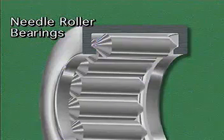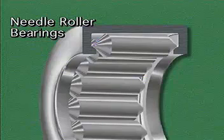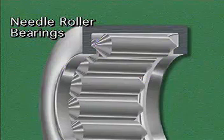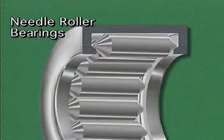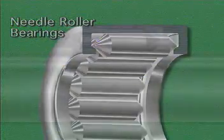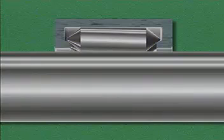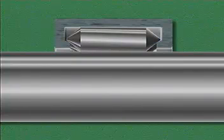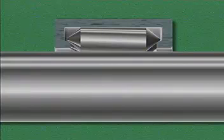Needle roller bearings are similar to cylindrical bearings, but the rollers are much thinner. Needle roller bearings can support a great deal of radial load because many of the thin rollers can be put into a bearing. Needle roller bearings are often mounted without an inner ring or a retainer; instead, the rollers ride directly on the surface of the shaft. Because these bearings can be mounted without an inner ring, they are often mounted on shafts where space is limited.